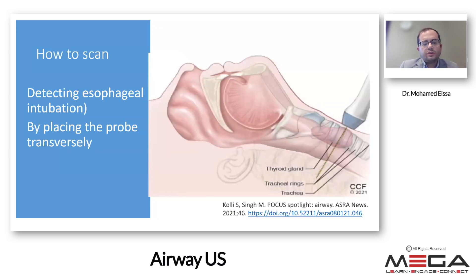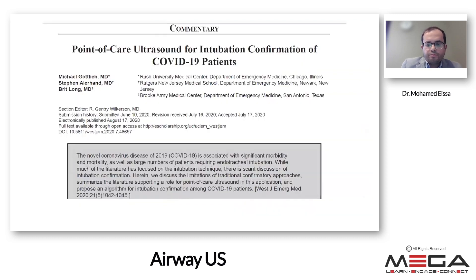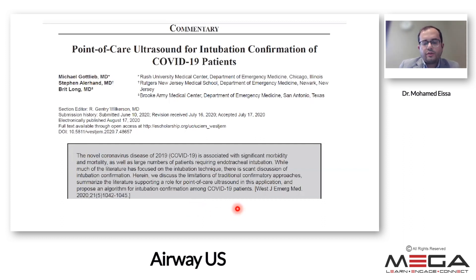To detect inadvertent esophageal intubation, perform dynamic scanning during intubation by placing a high-frequency linear probe transversely just above the sternal notch. One study found that determining tracheal tube placement by ultrasound was fast and of high significant utility in cardiac arrest situations where end-tidal CO2 was not reliable. It was also described in COVID-19 patients to avoid spreading the virus by auscultation and potentially insufflating the stomach after unsuccessful intubation.